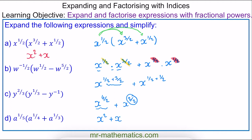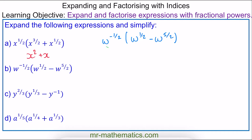For question b, I'll multiply out the bracket. We have w to the power of negative one half multiplied by w to the power of a half, and then the second term is w to the negative one half multiplied by w to the five over two. Because the bases are the same and I'm multiplying them, I can add the two powers: negative one half add one half becomes zero.